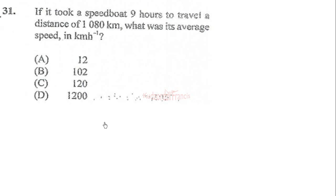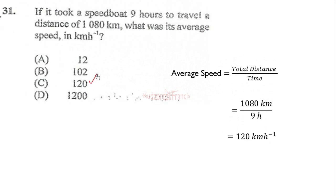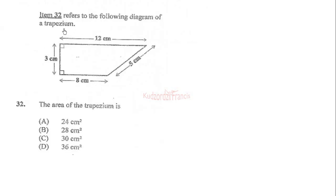Question 31 from the January 2019 paper: if it took a speedboat nine hours to travel a distance of 1080 kilometers, what was its average speed in kilometers per hour? Average speed equals total distance divided by total time taken. The distance is 1080 kilometers and the time is nine hours, so we divide to get 120 kilometers per hour. The correct answer is C.